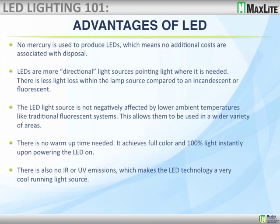No heavy metals like mercury are used in LED products, so we're not filling landfills with heavy metals the way we are with compact fluorescent, fluorescent, and HID lamps. LEDs are more directional — the light is all going in a single direction. With a properly designed bulb or fixture, you have much less light loss than you would with incandescent or fluorescent sources.